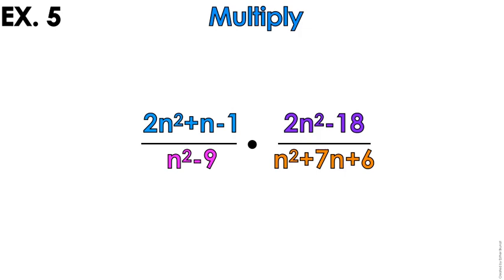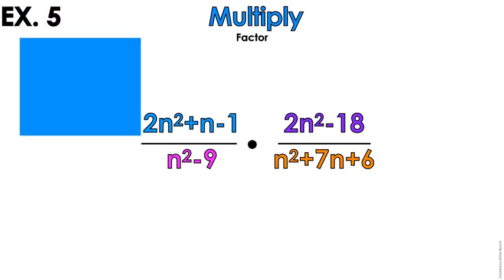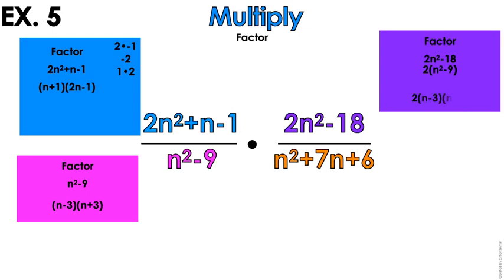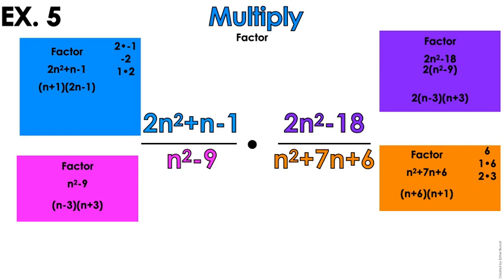Example number 5 out of 6. We have trinomials here, binomials here. Everything needs to be factored. So you might need to do some side work. Do the blue part separately, the pink part separately, the purple part separately, and the orange part separately. If you don't know how to factor trinomials, I have videos on that. Please go find them.